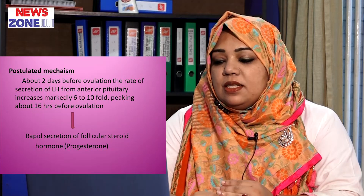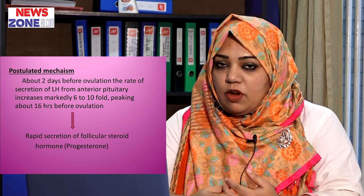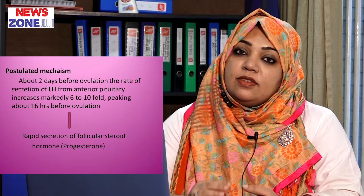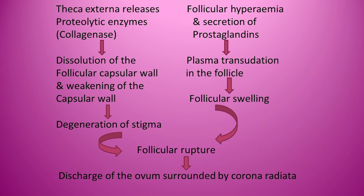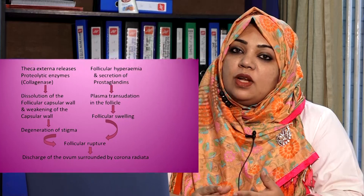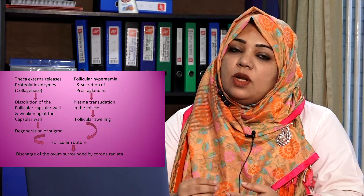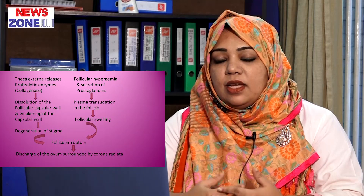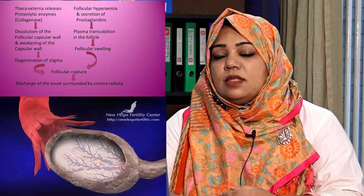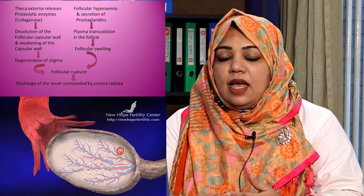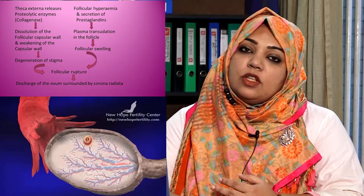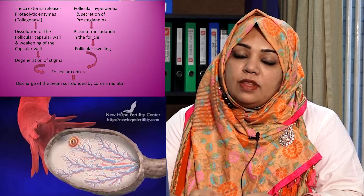There is also rapid secretion of progesterone hormone from the follicles. So two hormones are secreted in high quantities: luteinizing hormone and the steroid progesterone. Then from the theca externa — the thick external layer of the follicles — a proteolytic enzyme called collagenase is released. This collagenase causes dissolution and weakening of the follicular capsular wall.